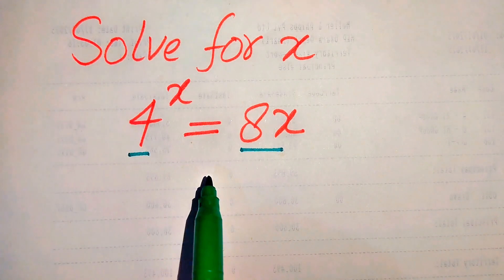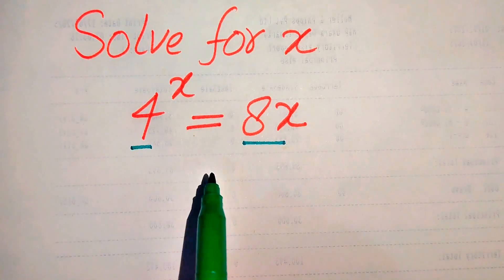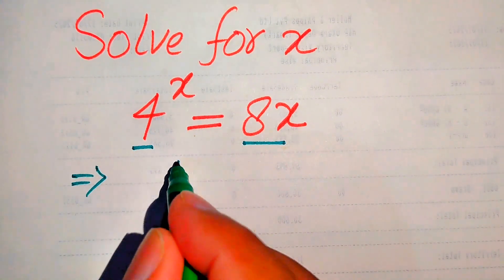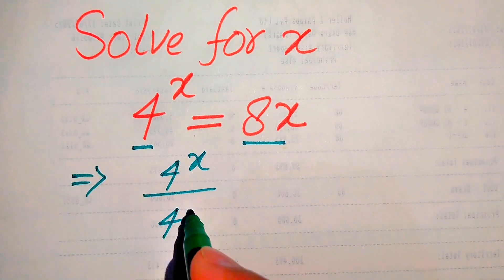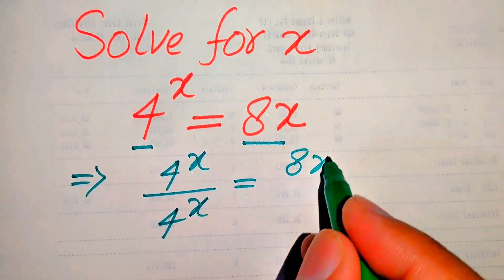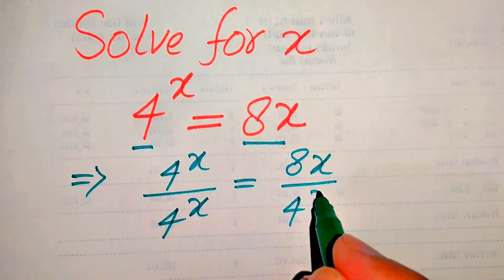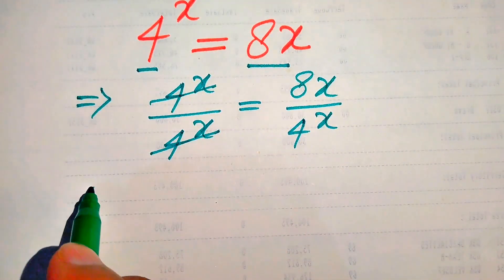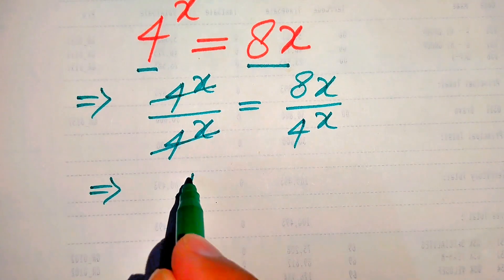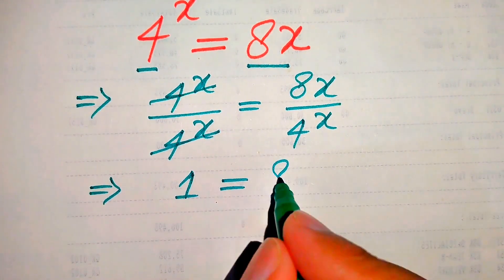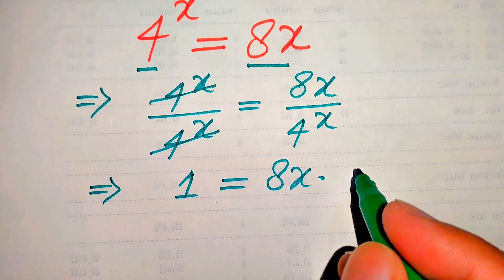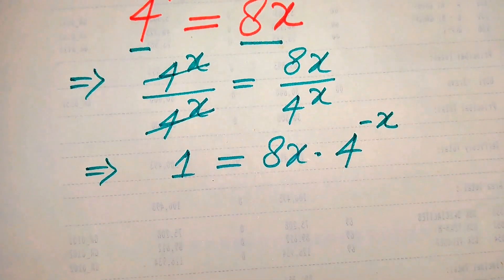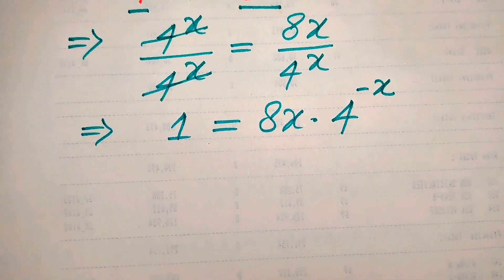First, we divide both sides by 4 to the power of x. It will be written as 4^x divided by 4^x equals 8x divided by 4^x. The 4^x cancels out on the left-hand side, giving us 1. We move the 4^x to the numerator on the right, and it becomes 8x · 4^(-x).